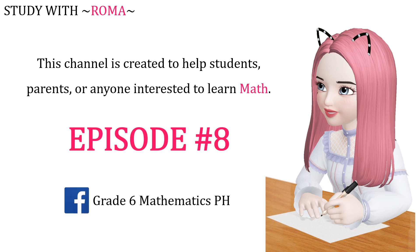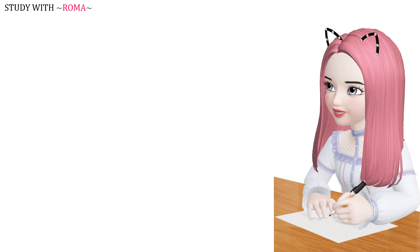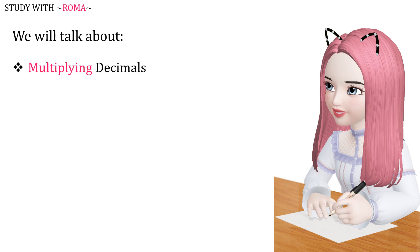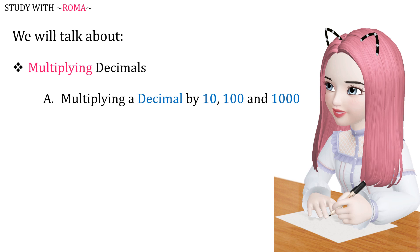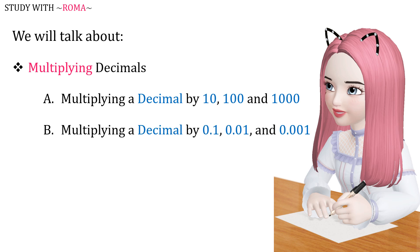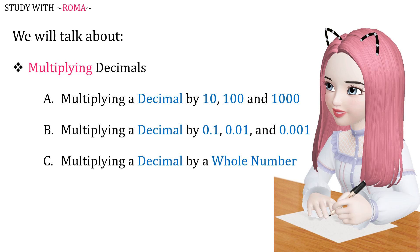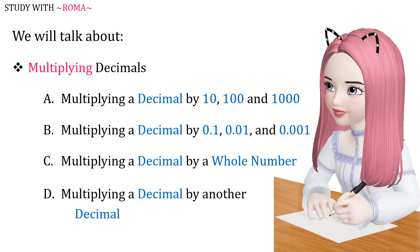And this is episode 8. Today, we will talk about multiplying decimals: multiplying a decimal by 10, 100, and 1000; multiplying a decimal by 0.1, 0.01, and 0.001; multiplying a decimal by a whole number; and multiplying a decimal by another decimal.